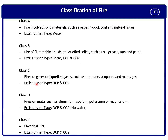Class C fire involves gaseous or liquid gas fuels such as methane and propane. To extinguish Class C fire, we displace oxygen using heavier gases — CO2 and DCP are heavier than air, so they displace oxygen. This creates starvation, removing oxygen from the fire triangle to extinguish the fire.